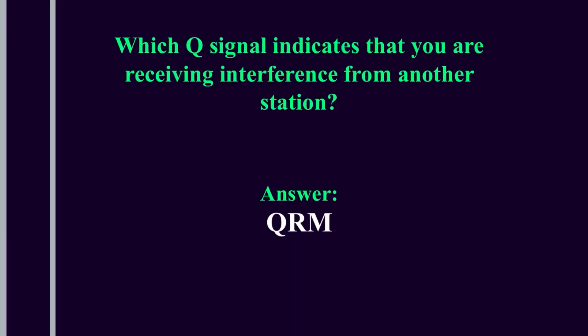Which Q signal indicates that you are receiving interference from another station? QRM. Helpful tip: think of the M in QRM as man-made interference.